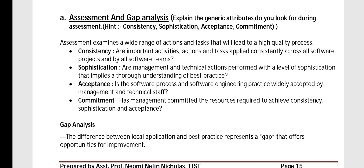Assessment examines the actions that lead to high-quality processes — that is, whether there is consistency, sophistication, acceptance, and commitment. To assess consistency, we ask: are important activities and tasks applied consistently across all software projects and by all software teams? For sophistication, we ask whether management and technical actions are performed with some level of sophistication — that is, whether complex processes exist for better understanding of best practices.